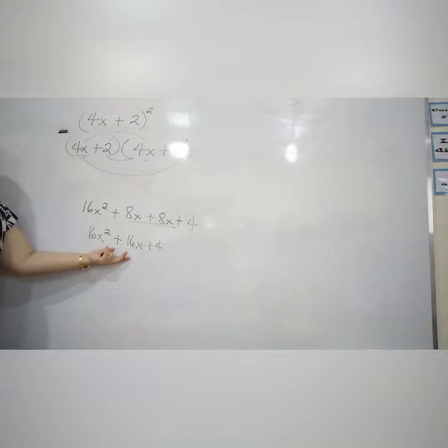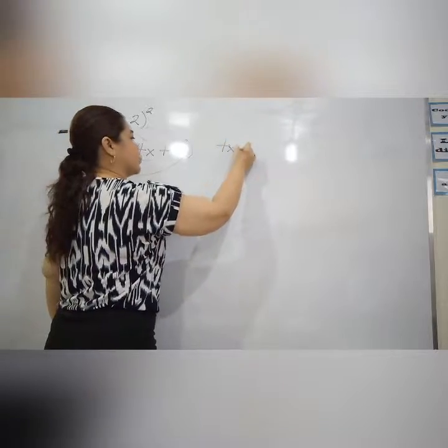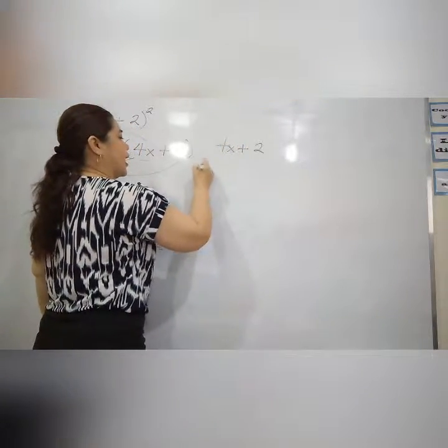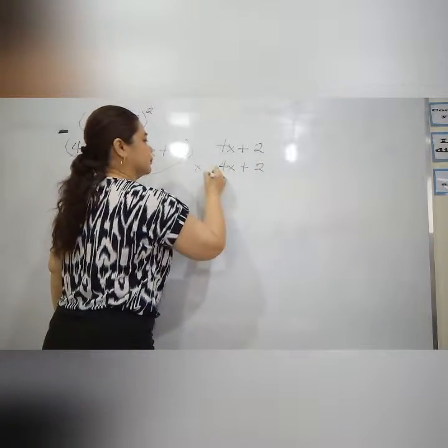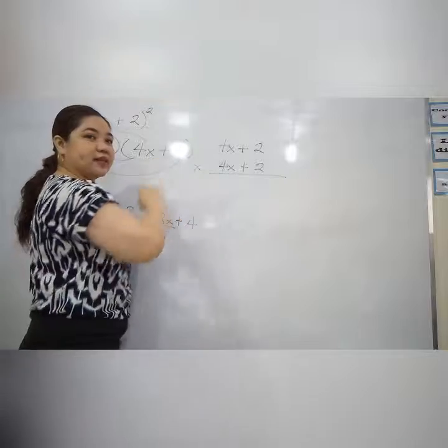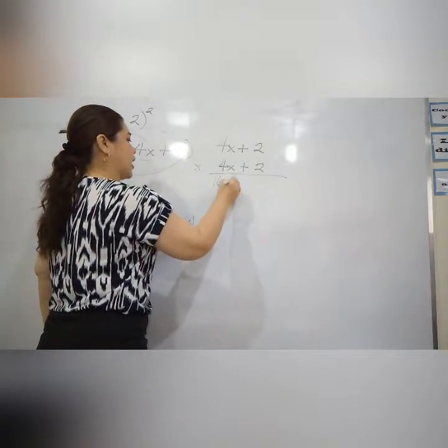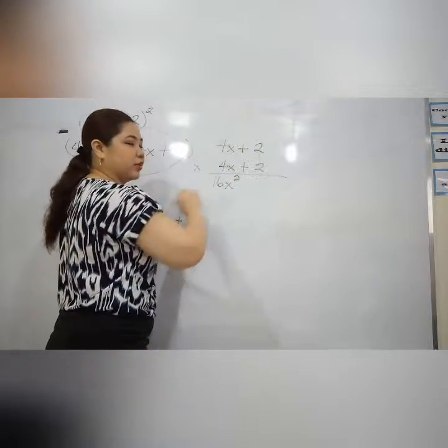So that's the foil method. How about the vertical method? 4x plus 2 times 4x plus 2. 4x times 4x, 16x squared. Okay, 16x squared. 4x times 2, 8x.